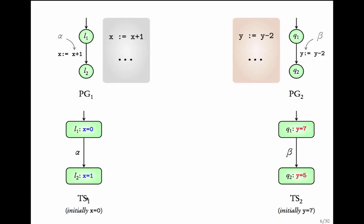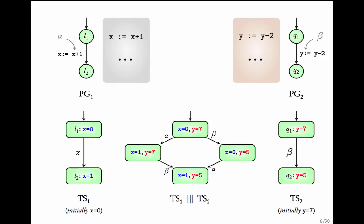We have taken the initial value of x to be 0 and the initial value of y to be 7. Starting from L1, x equal to 0, the transition system goes to L2 with x equal to 1. This is the transition system corresponding to program graph PG1 with x equal to 0. Similarly, this is the transition system corresponding to program graph PG2 with the initial value of y taken to be 7.